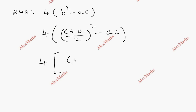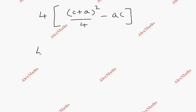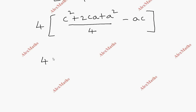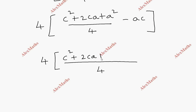Looking at the numerator, (C plus A) whole squared divided by 4 gives us C squared plus 2CA plus A squared, all divided by 4, minus AC. So we have C squared plus 2CA plus A squared minus 4AC, all over 4.